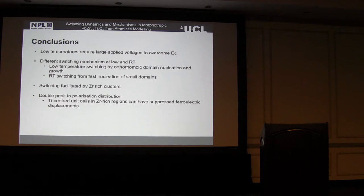To conclude this first part, we find that at low temperatures you need to have a large voltage to switch the material, so that can sometimes give you false results. There's a different switching mechanism at low and room temperature. At low temperature, you've got switching through orthorhombic domains via a nucleation-growth mechanism. At room temperature, you've got this fast nucleation with small dimensions which coalesce. We find the switching is facilitated by zirconium-rich clusters. And we find a double peak in the polarization distribution at low temperatures, and this is due to titanium-centered unit cells in zirconium-rich clusters which suppress the ferroelectric displacements.